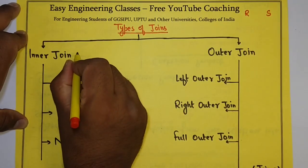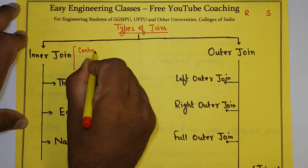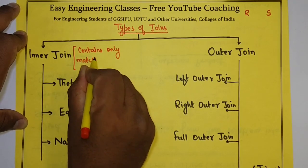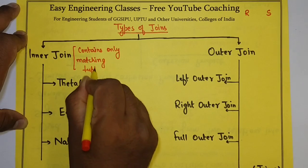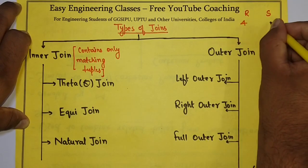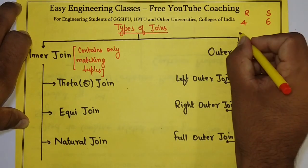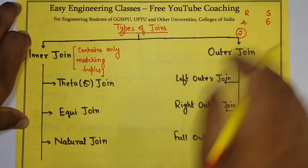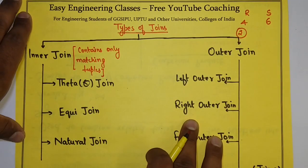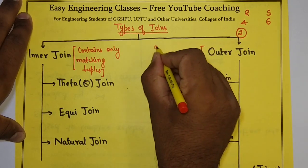The result of inner join contains only matching tuples. For example, suppose in relation R I have four tuples and in S I have six tuples. Out of these, only two tuples are matched based on the join condition, so the outcome of inner join will contain only those two tuples.